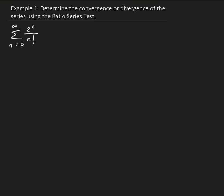If the result is inconclusive, we have to use another series test. So let's go ahead and set up the limit. The nth term for the series is 2 to the n over n factorial. And the (n+1)th term — we're just substituting n+1 — so we get 2 to the n+1 divided by (n+1) factorial.